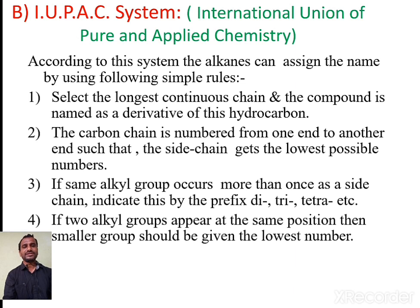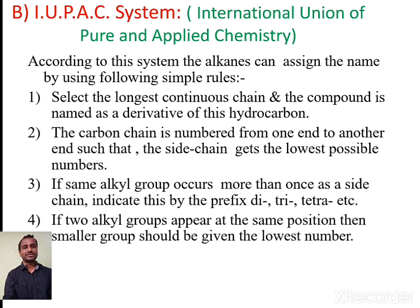The first rule: select the longest continuous chain — the compound is named as a derivative of this hydrocarbon. The second rule: the carbon chain is numbered from one end to the other such that the side chain gets the lowest possible number. The third rule: if the same alkyl group occurs more than once as a side chain, indicate these by the prefix di, tri, tetra, etc. — two alkyl groups use di, three use tri.